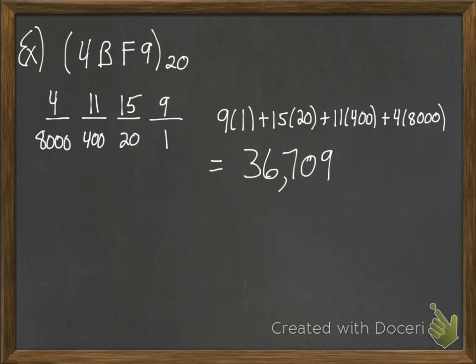And so that's how we convert from one base, a positional base n system, over to base 10, or decimal.